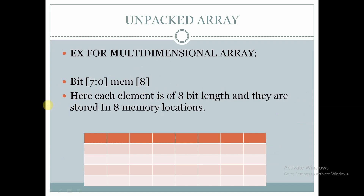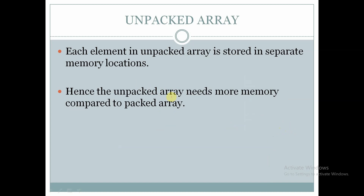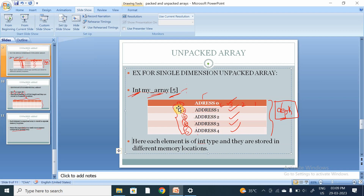For multidimensional unpacked arrays, we declare the data type, the size of each element — in this case 8-bit — followed by the name of the array, where 8 represents the number of memory locations. Each element is of 8-bit length and they are stored in 8 different memory locations. Each element is stored in one memory location, so there are 8 elements stored in 8 memory locations. Each element in an unpacked array is stored in different memory locations; hence, the unpacked array needs more memory compared to a packed array. This is all about packed and unpacked arrays — thank you for watching.